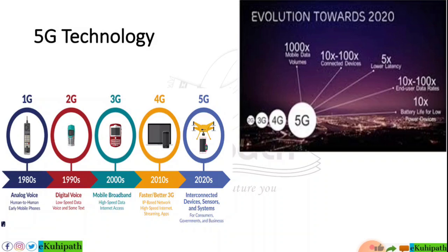Starting from 1G, this was the first generation with analog voice, which was transferred as human-to-human voice. In 1990, it was 2G — analog-to-digital voice — and we also had text messaging. Then came 3G, which introduced mobile broadband, high-speed data, and internet.